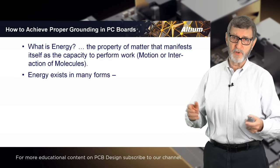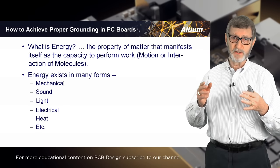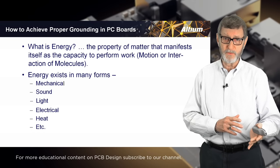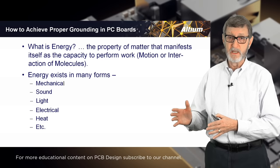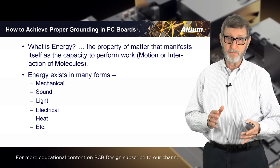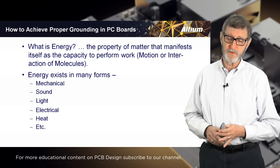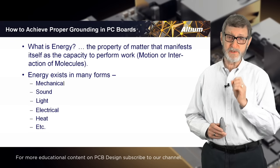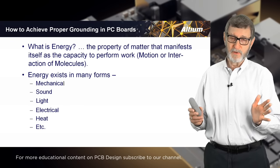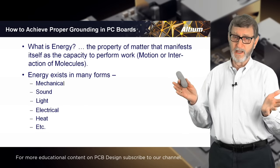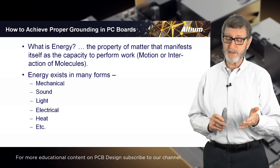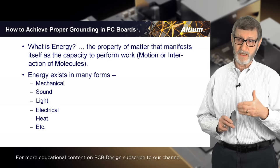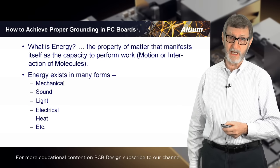Ralph nodded and said that energy exists in many forms — mechanical energy, light, heat, sound, electrical, et cetera — and energy is never destroyed or created; it's converted from one form to another. He then pointed out that light energy and electrical energy are exactly the same thing: absolutely precisely the same form of energy. The only difference between them is frequency. Light is about a million times higher frequency than electrical energy at 500 MHz. Other than that, they are identical.